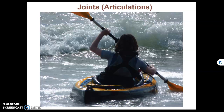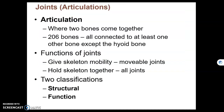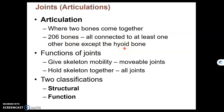This next chapter is on joints or articulations. A joint or articulation is when two bones come together. All the bones in our skeleton will articulate with at least one other bone, except, as you know from the previous chapter, the hyoid bone.